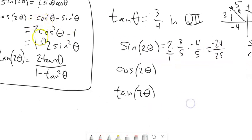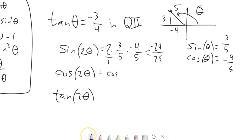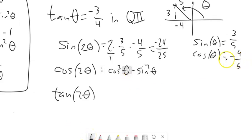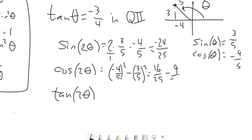For cosine of 2 theta, I'll use cosine squared minus sine squared — just a preference. Cosine is negative 4/5, so cosine squared is 16/25. Sine is 3/5, so sine squared is 9/25. The negative times negative gives positive, so 16/25 minus 9/25 equals 7/25. Cosine of double the angle is 7 over 25.